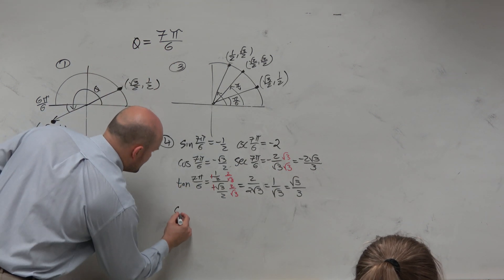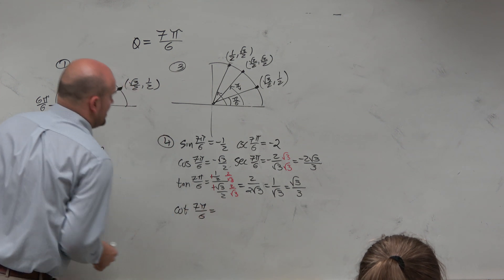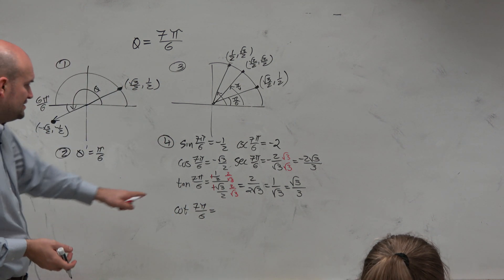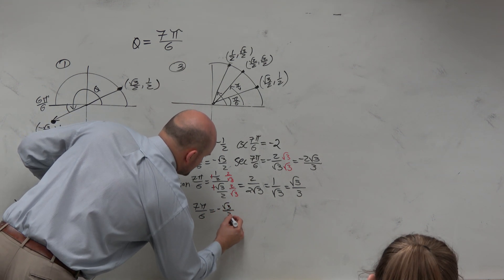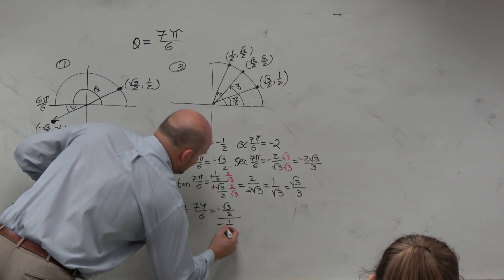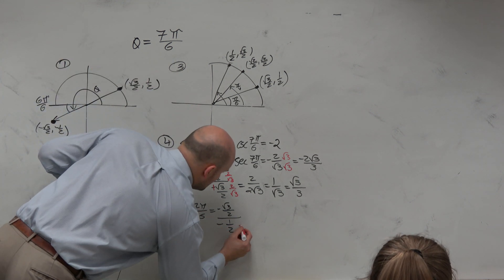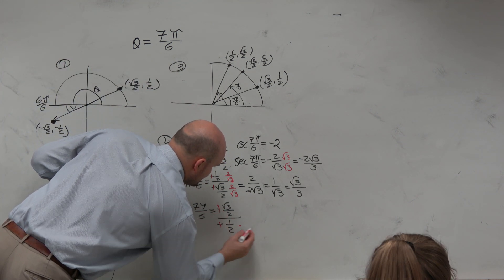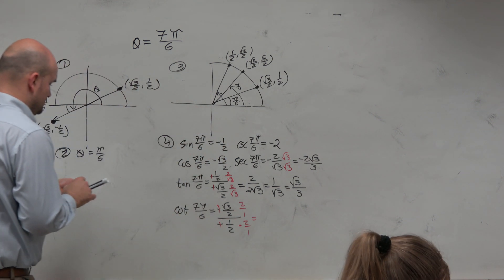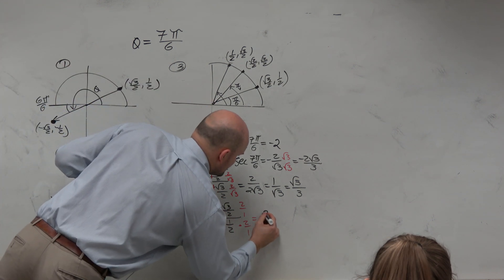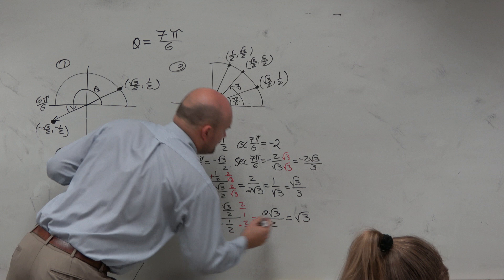And then last but not least is the cotangent of 7 pi over 6. And when we do the cotangent of 7 pi over 6, it's just the reciprocal of this. So negative square root of 3 over 2 divided by negative 1 half. And again, we could just multiply by the reciprocal. Those both go to positive. So multiply by 2 over 1. And you'd get 2 square root of 3 over 2, which is just equal to the square root of 3.